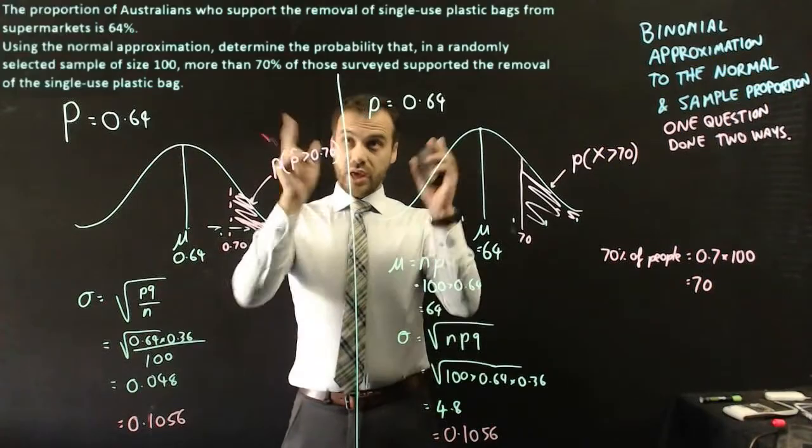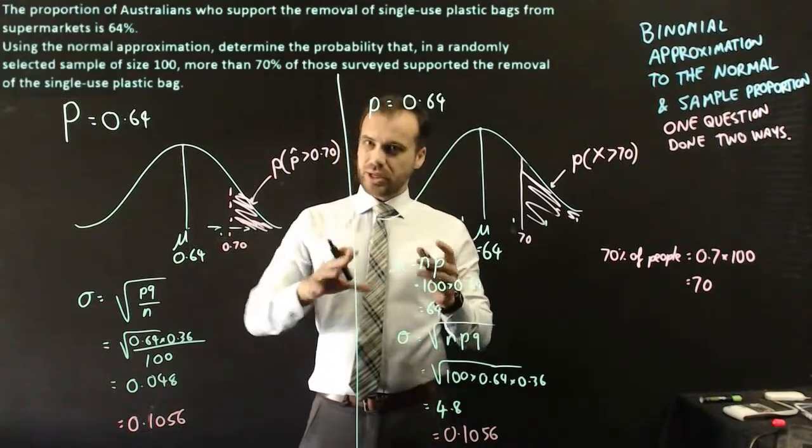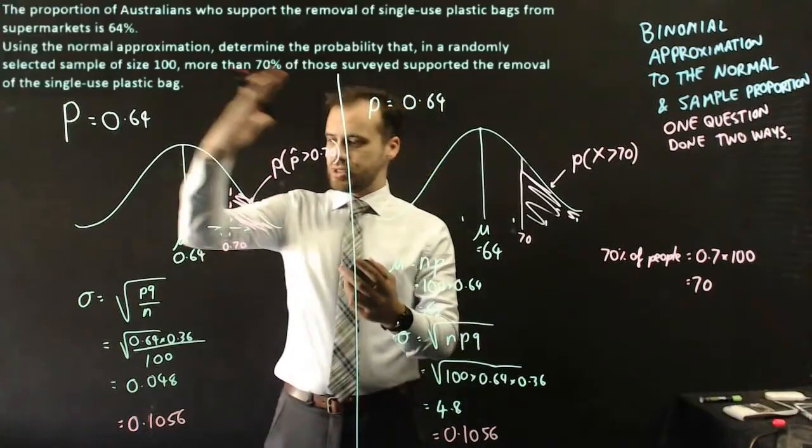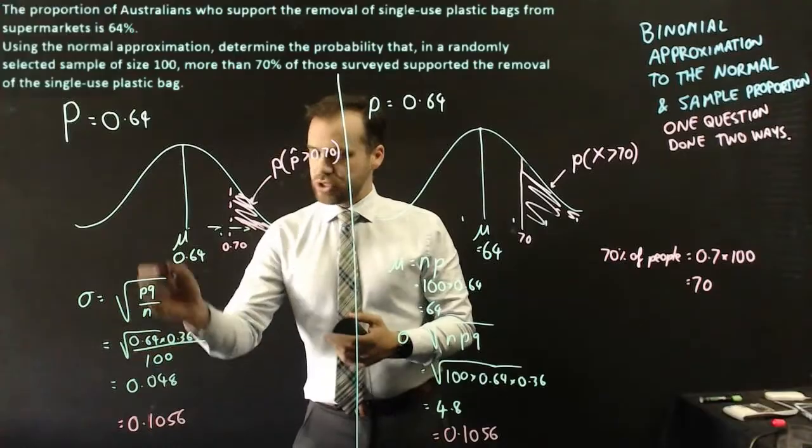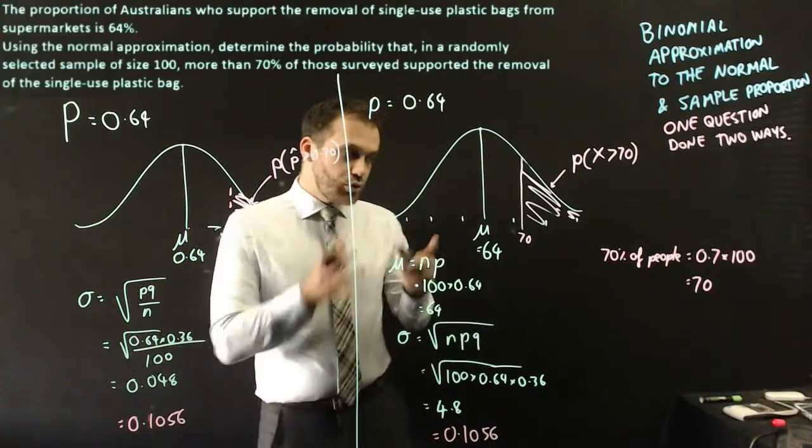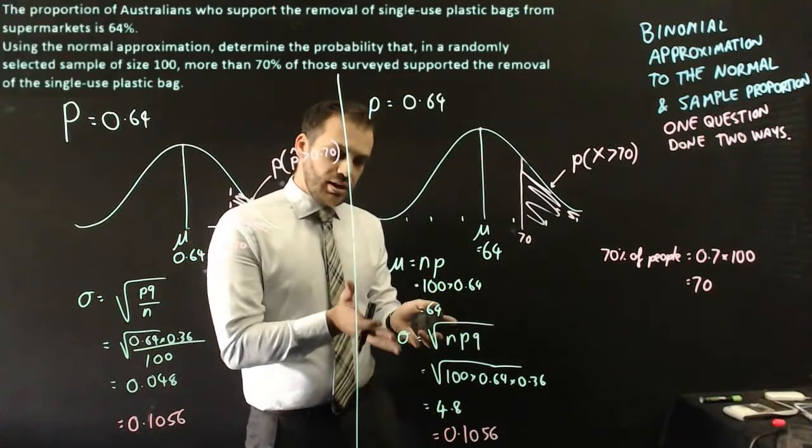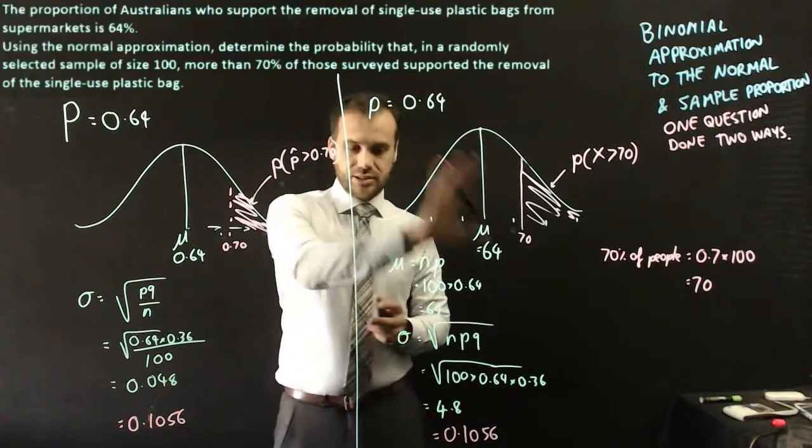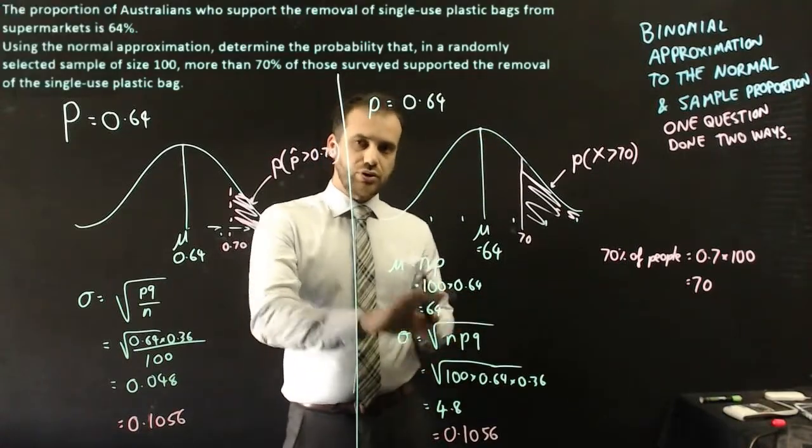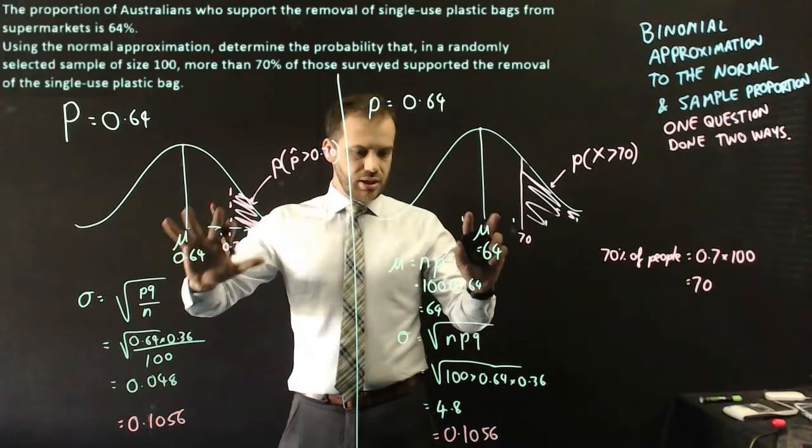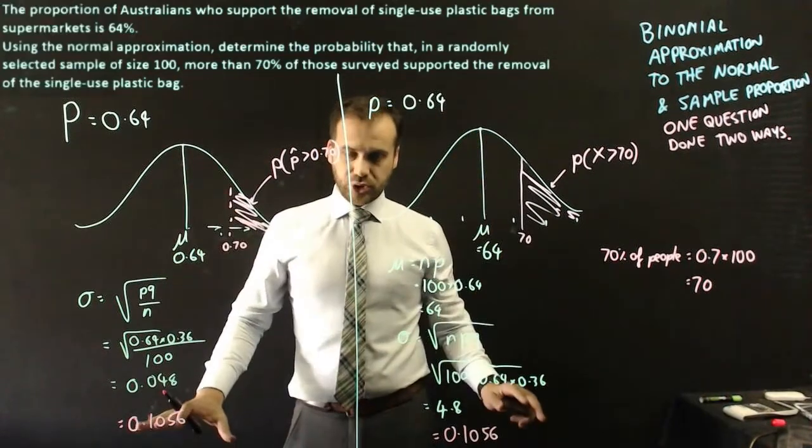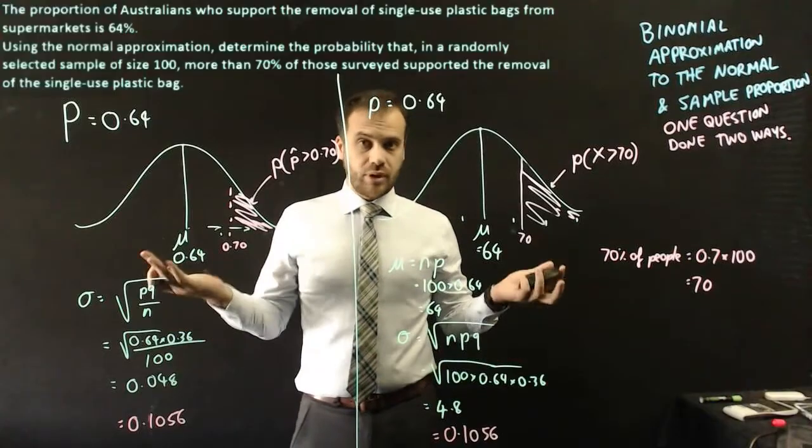Now you can see that that question probably wanted you to use this kind of method, and particularly this standard deviation formula. You could also use this. And you would get exactly the same answer. Even though you're using a different normal distribution. So two different options. They both work.